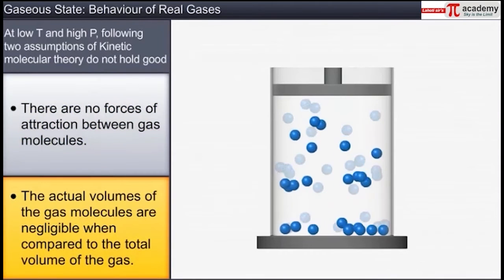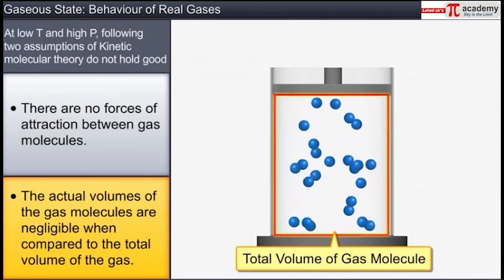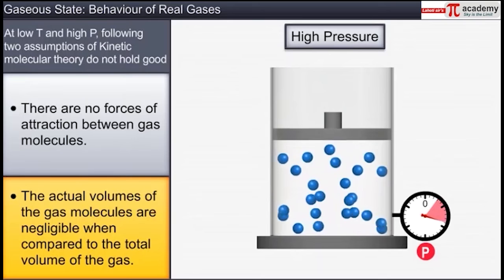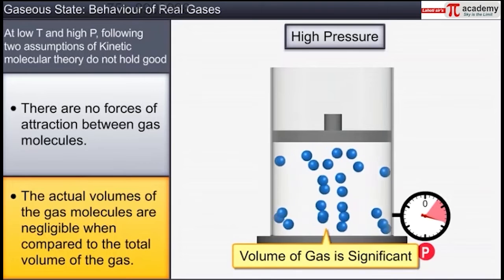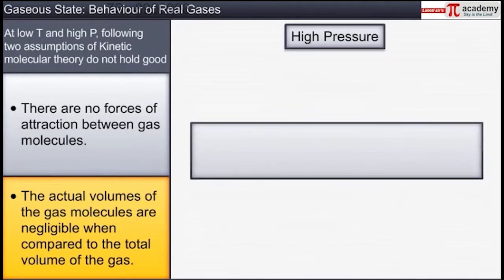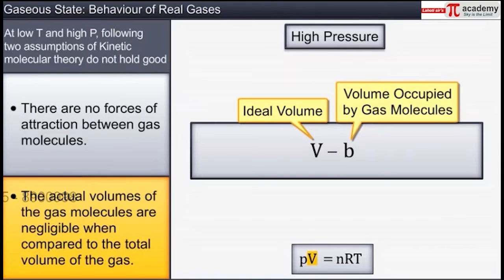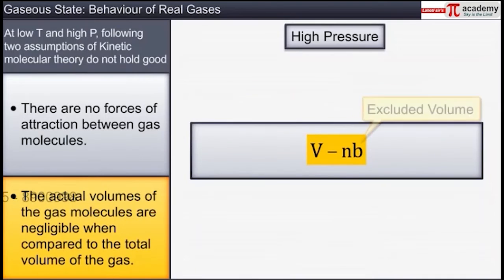In the second assumption, the actual volume of the gas molecules is negligible compared to the total volume of the gas, which is valid only at very low pressure. But at high pressure, the molecules are restricted to move in less volume, and hence the volume occupied by the molecules themselves becomes significant. Therefore, the volume V in the ideal gas equation is corrected as V_ideal = V − nb, where b is the excluded volume, a constant characteristic for each gas.